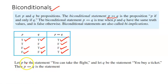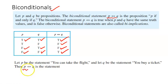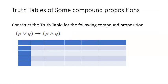For example, let p be 'you can take the flight' and q be 'you buy a ticket.' The biconditional p if and only if q translates to: 'You can take the flight if and only if you buy a ticket.' Biconditional statements are also known as bi-implication.